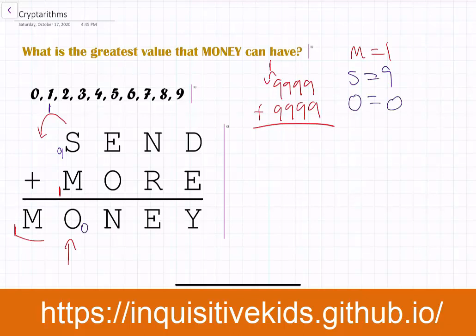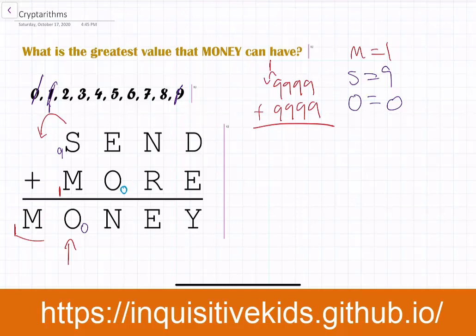This might be a little confusing because we have the letter O and the digit 0. So 9, 1, and 0 are all crossed out. If we know that O is 0 in one place, the O is also 0 everywhere it appears. Now, in the hundreds place, something weird happens.